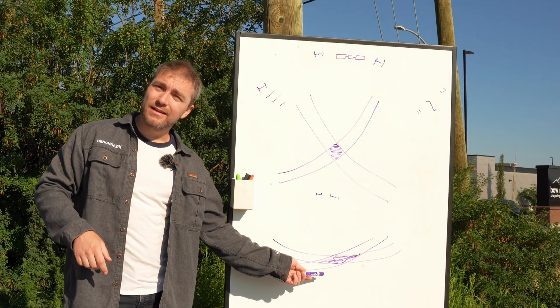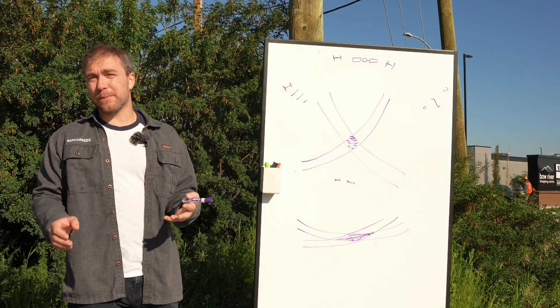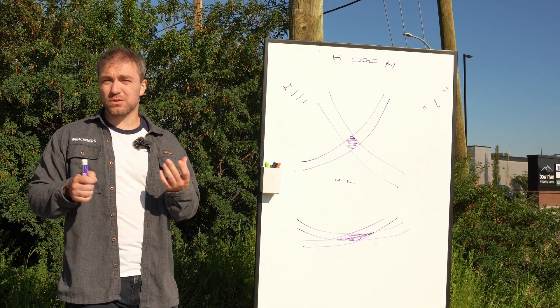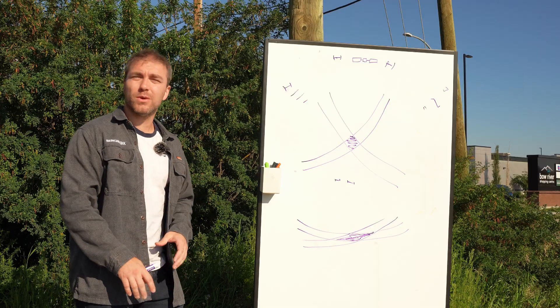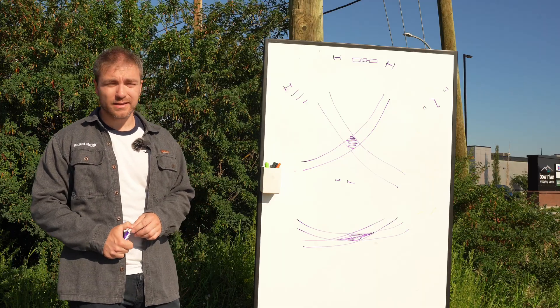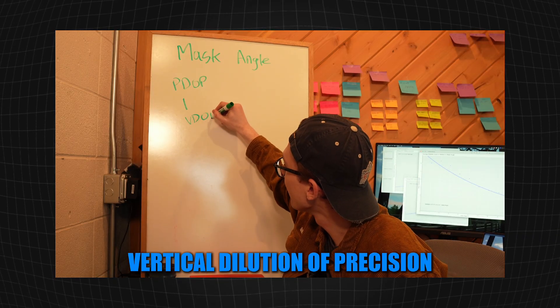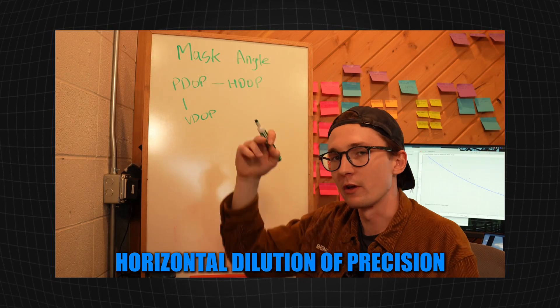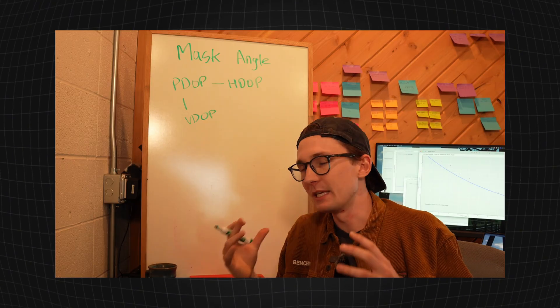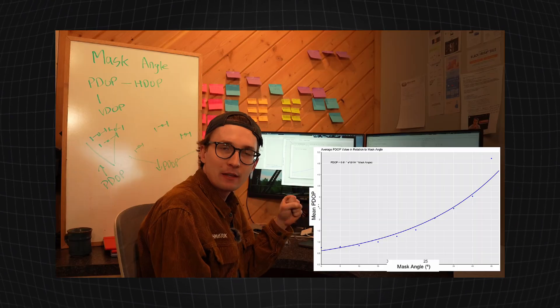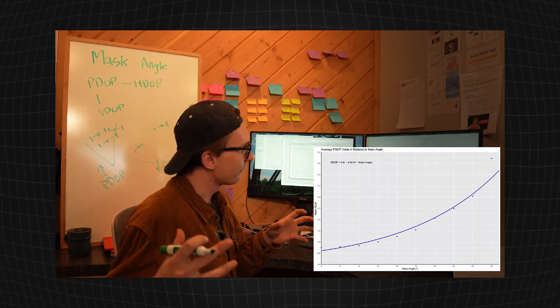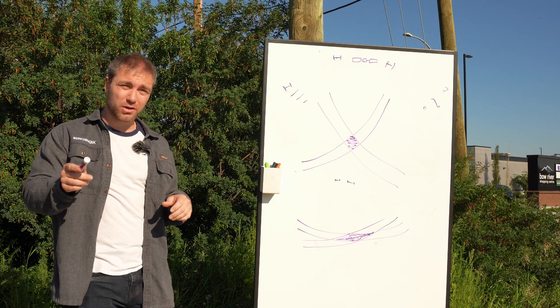And this area is what the DOP numbers are representing when they go higher and higher, which is why a low DOP number or a DOP number very close to one is considered good. Now you can actually see this in action. When Nolan did his mask angle video, and he starts cropping the mask angle up, and you start only being able to see the satellites that are really right on top of you, you can watch those DOP numbers get higher and higher and higher, making it much harder for him to get a shot.